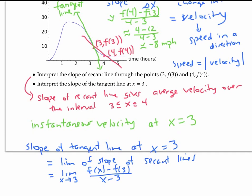In the limit, as the length of the time interval goes to zero, we're going to get the exact velocity at exactly three hours.